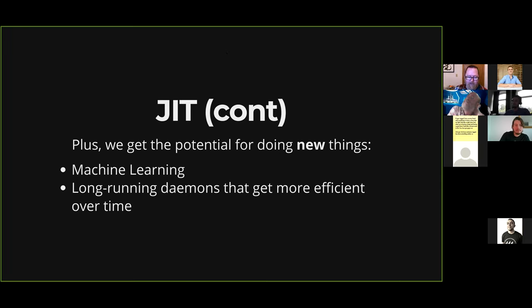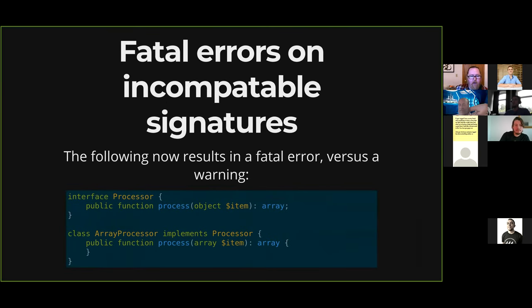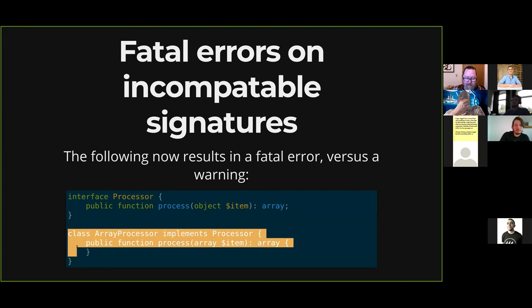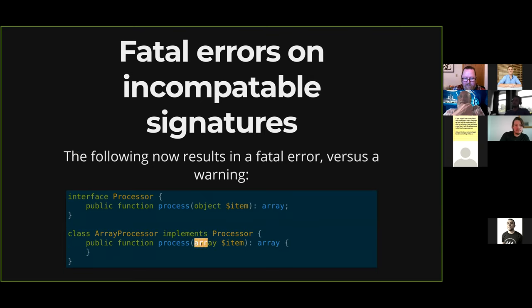PHP 8 now has fatal errors on incompatible method signatures. In the past, if you had an interface defining a public function process accepting an object and returning an array, and a child class implementing it but changing the argument from an object to an array, you would just get a warning and execution would continue. Now you will get a fatal error. If you relied on this behavior, you need to think about your upgrade to PHP 8. This is the right behavior — it really absolutely should do this — but it didn't before, so something to consider.